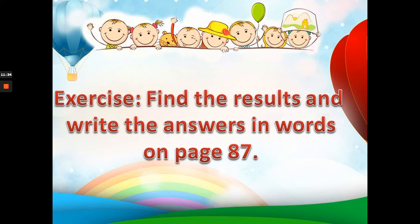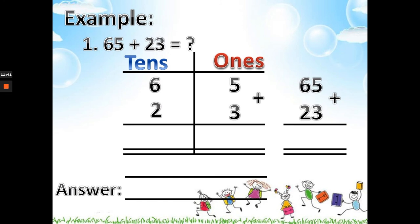Find the results and write the answers in words. I will give you an example using number one. We have numbers arranged in tens and ones place just like in your book. We are going to add the ones place first: 5 plus 3 — what do we have? Yes, 8. And the tens place?